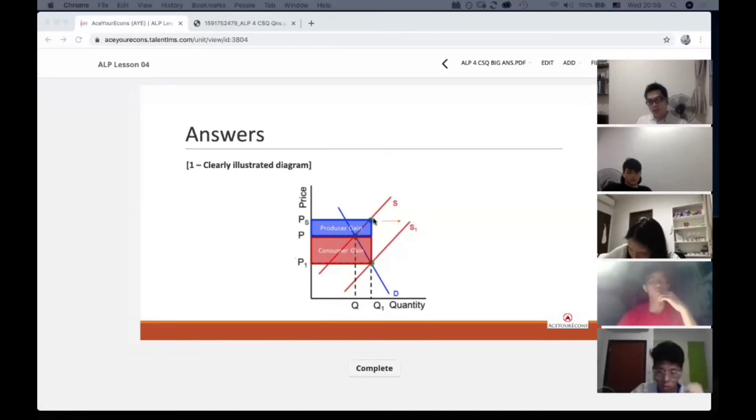So based on this gap, we can distribute the subsidy that is granted by the government across the two parties.